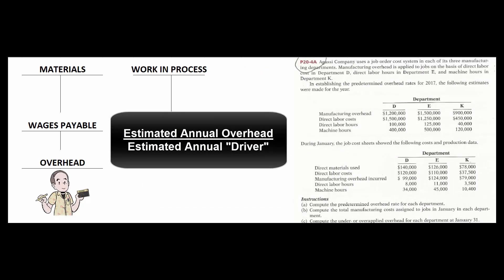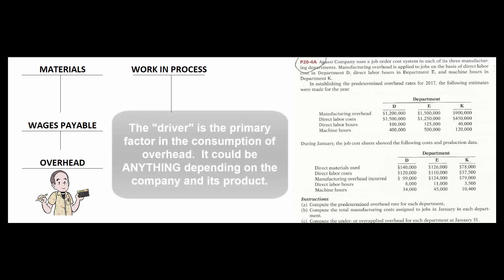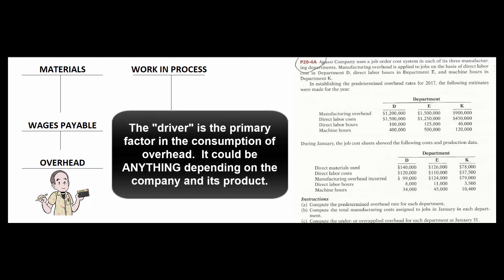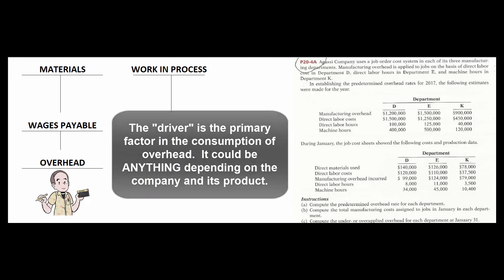To create the overhead application rate, we estimate our total annual overhead for the upcoming year and divide it by our total estimated driver. The driver is some cost or factor we think causes us to incur overhead costs. If we're in a labor-intensive business where all laborers make about the same, we might use direct labor hours as the driver.